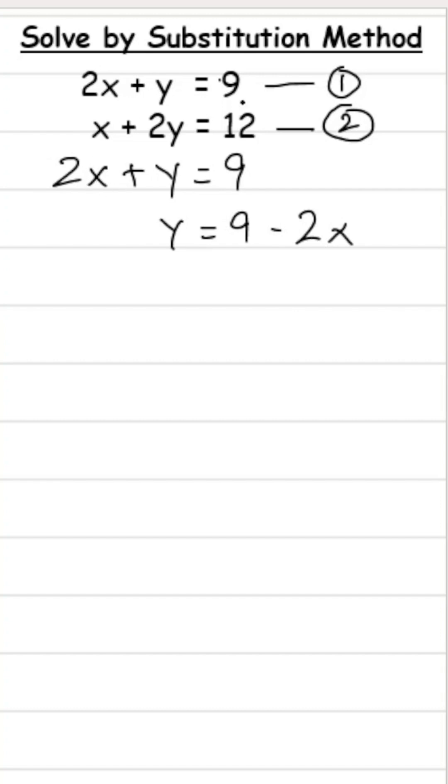This 2x when shifted to the other side would become minus 2x. Substitute this expression of y in equation number 2 to get the value of x, and that's why this method is called the substitution method.